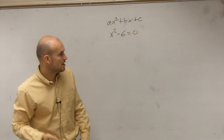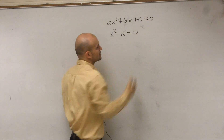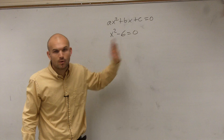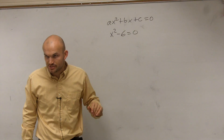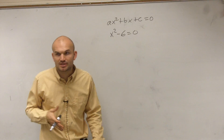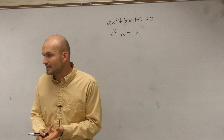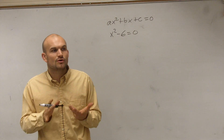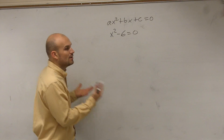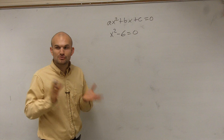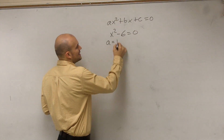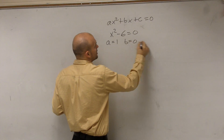Make sure it's always in a quadratic equation, because to find the discriminant and to find the quadratic formula, we have to know the value of a, b, and c. What I like to do, just to make sure I'm not going to make any mistakes, is label what my a, b, and c are.